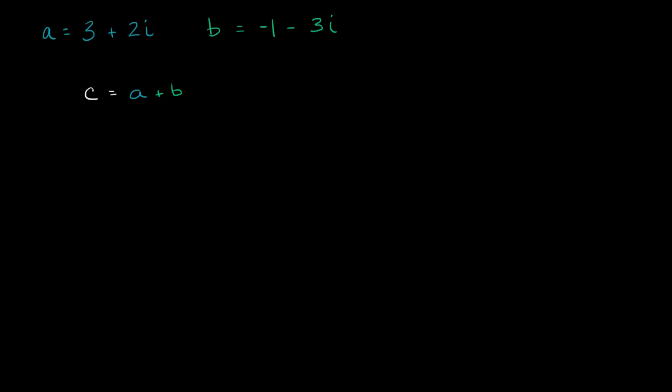Well, what we could do is, this is just going to be equal to 3 plus 2i, that's a, plus b, which is negative 1 minus 3i. We could write it like that if we want to really be clear what b is and what a is.